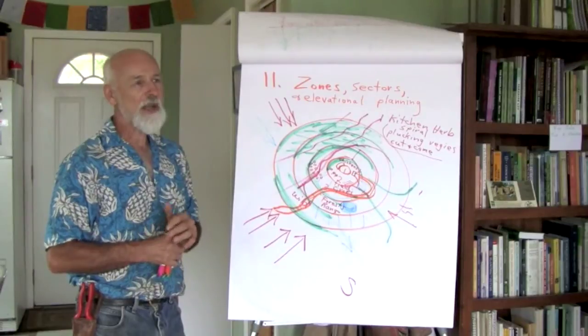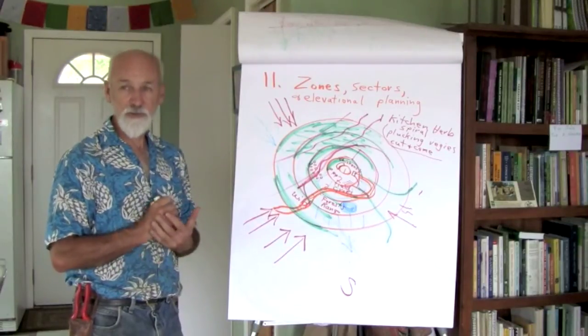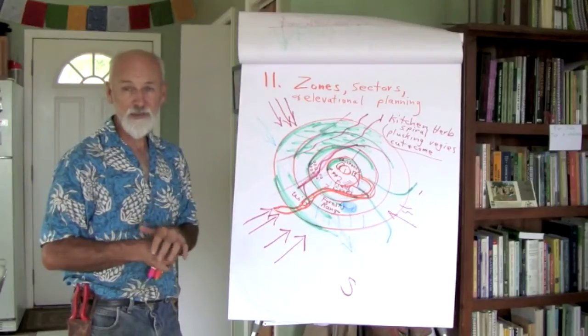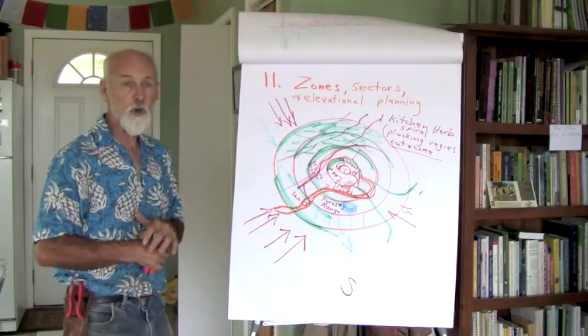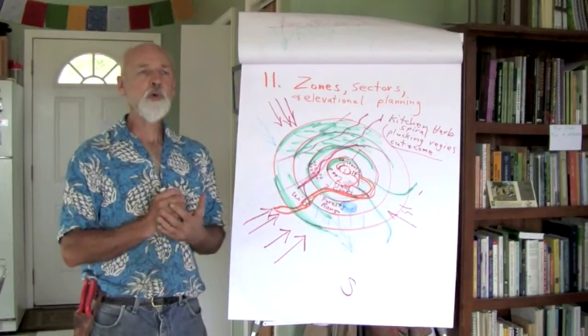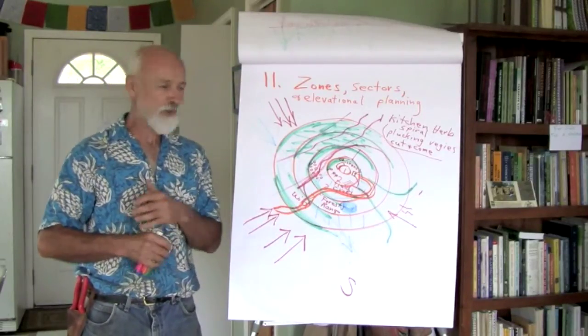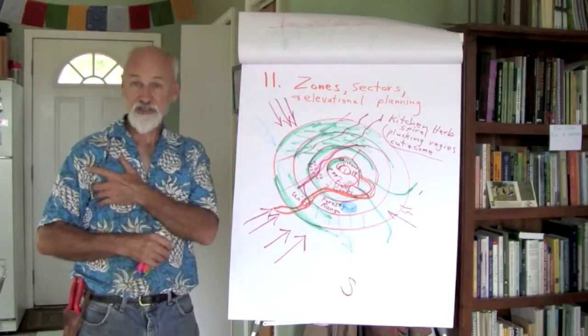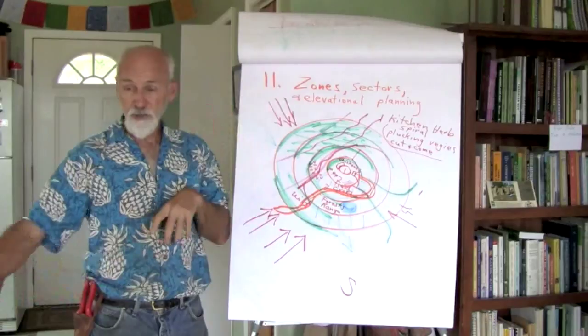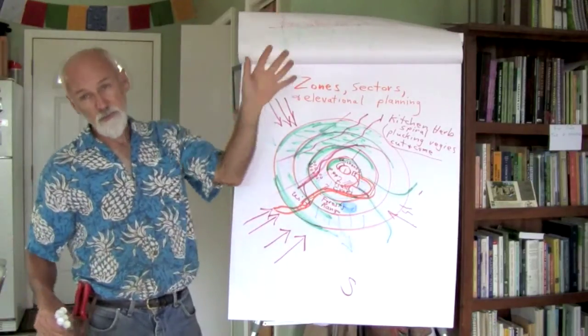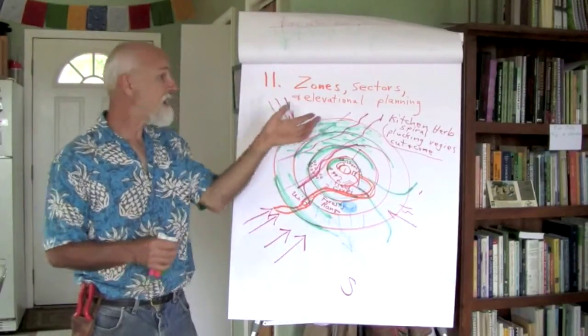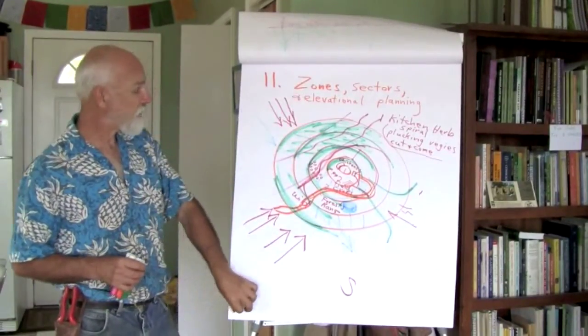And where is the thermal belt in the system? Where is the warmest air? Where are the frost pockets? Where's the coldest air? Where are those windy exposed places? What do we and don't we place in certain places, depending on elevation. Dirty water, you know, clean water above, dirty water below. Water tends to get dirty as it moves downhill. Where's our water source going to be? So lots of things to think about with elevational planning.